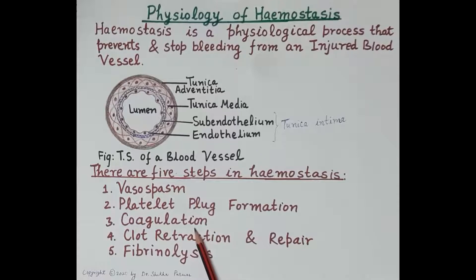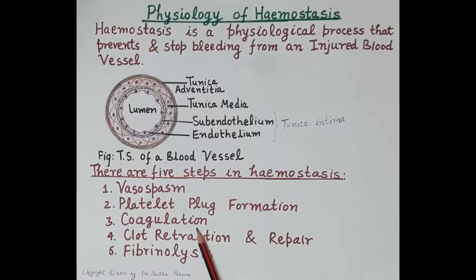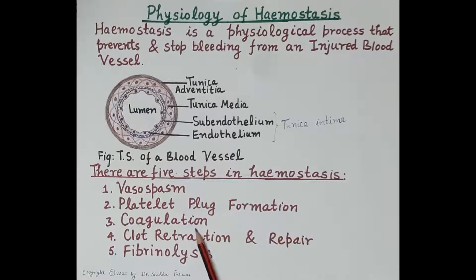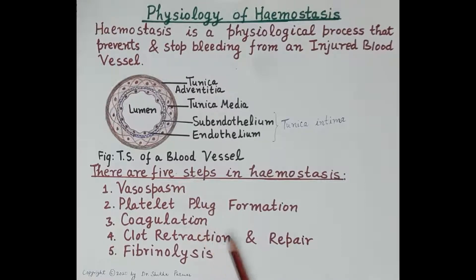Platelet plug formation is followed by coagulation. In coagulation, there is formation of a clot. A fibrin mesh network is produced and laid over the platelet plug. This fibrin network strengthens the platelet plug, and the platelet plug is now termed the clot. This clot seals the injured site of the blood vessel and further stops the bleeding.